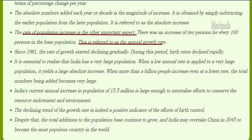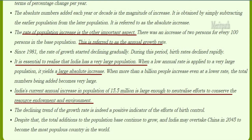The rate of population increase is another important aspect. An increase of two persons for every hundred persons in the base population is referred to as the annual growth rate. Since 1981, the rate of growth has started declining gradually, and birth rates have also declined rapidly. However, when a low annual rate is applied to a very large population, it still yields a large absolute increase. India's current annual increase in population of 15.5 million is large enough to neutralize efforts to conserve resources and the environment.